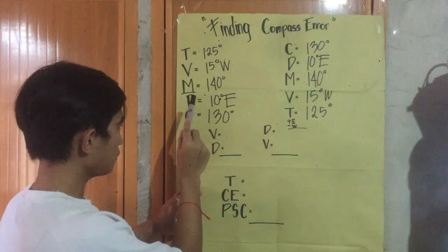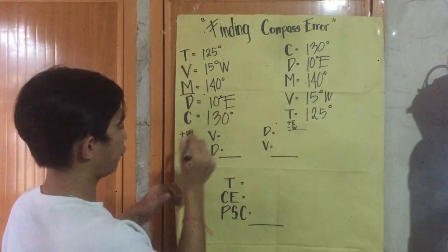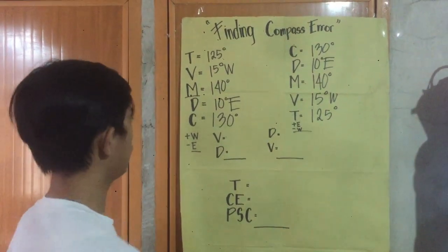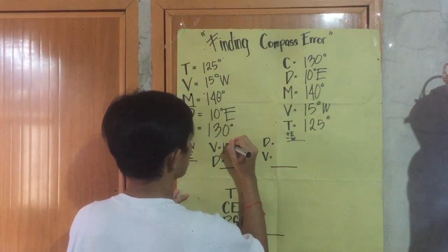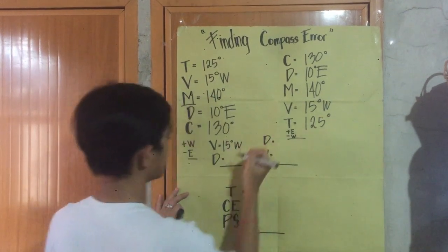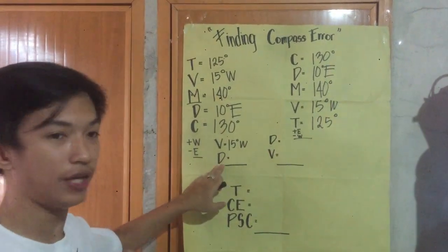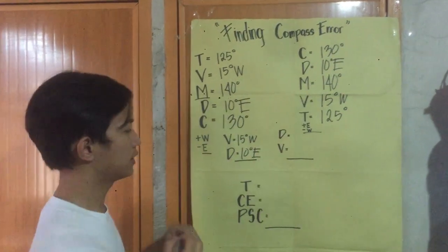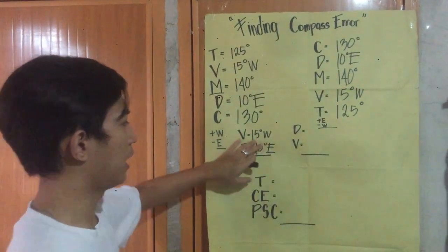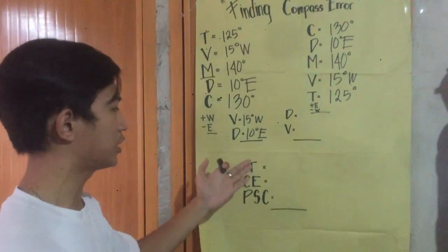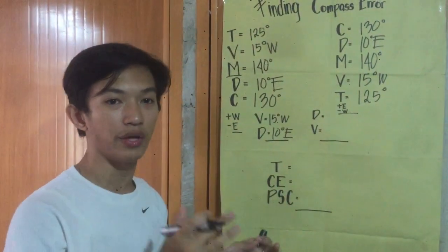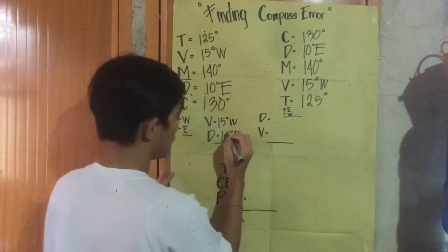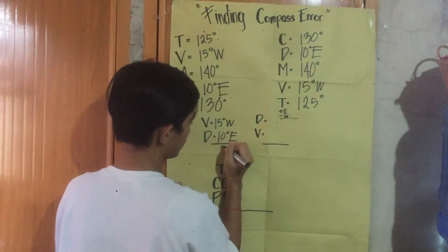So in finding the compass error, we're going to use the variation and the deviation. The variation is 15 degrees west and the deviation is 10 degrees east. We're going to use the biggest number's direction for our answer, and we're going to subtract because they are not alike.